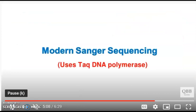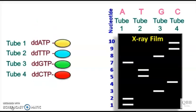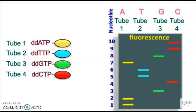In the modern Sanger sequencing method, each of the ddNTPs is attached with a fluorescent dye. It can be yellow, blue, green, or red. Instead of having X-ray film on a gel, we will now have a gel that would give fluorescence when exposed to UV light.